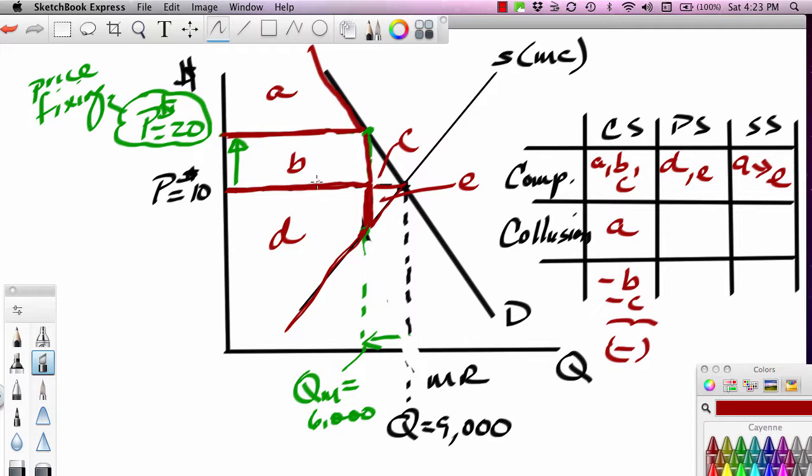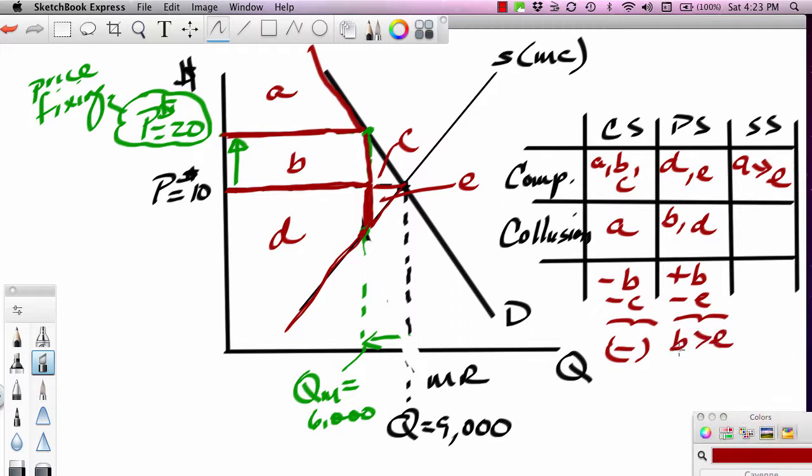How do the two producers come out? Well, their price is now what? 20. And we're only producing out to 6,000. So producers get below the price line, above the supply curve, out to 6,000. Producers get what? B and D. So producers pick up B, lose E. B is greater than E. Again, you've seen this. So the two producers win by cartelizing. Society ends up with A, B, and D. Society loses what?